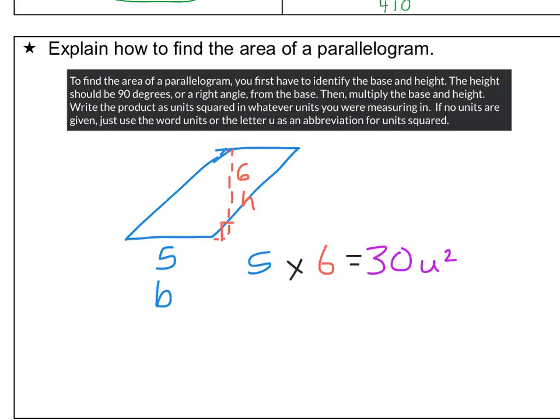And here's what I said for the star. Area of a parallelogram is identifying the base and the height, and the height should be 90 degrees from the base, top and bottom right there. Then you multiply base and height, and you write that number as units squared. Now if this was 5 inches and this was 6 inches, if I was measuring in inches, this would be inches squared, because inches would be my units.